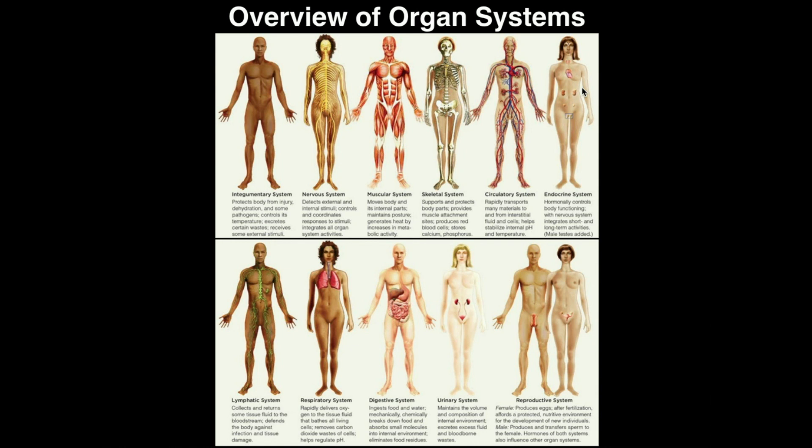The endocrine system consists of organs and tissues all over the body that produce hormones. These hormones can act in different ways and control different aspects of the body. One hormone you've probably heard of is insulin — the pancreas releases insulin, and that causes cells to uptake glucose from the blood. The endocrine system makes all sorts of different kinds of hormones, which you'll cover in ANP2.